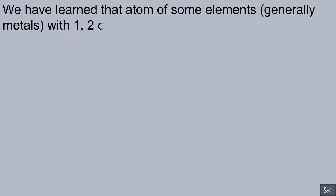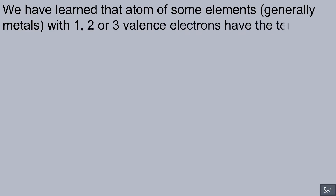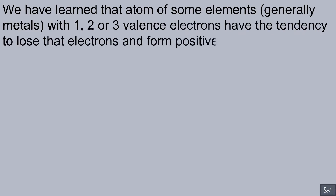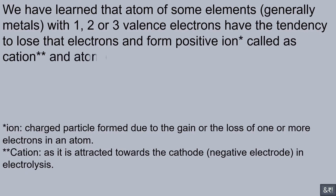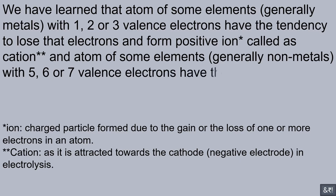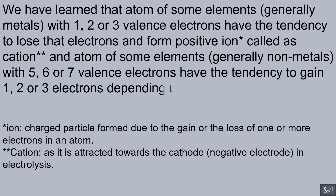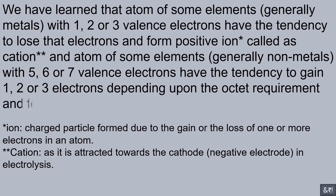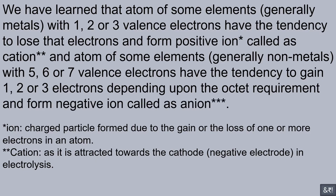We have learned that atoms of some elements — generally metals with 1, 2, or 3 valence electrons — have the tendency to lose those electrons and form a positive ion called a cation. Atoms of some elements — generally non-metals with 5, 6, or 7 valence electrons — have the tendency to gain 1, 2, or 3 electrons depending upon the octet requirement and form a negative ion called an anion.